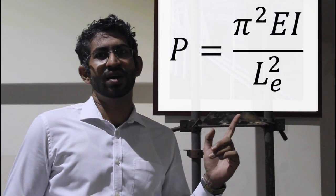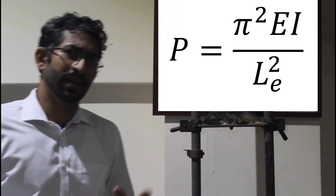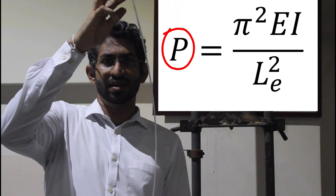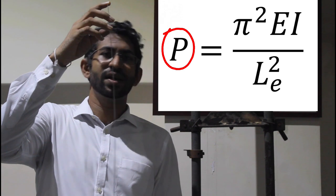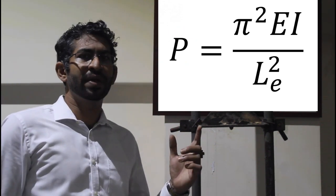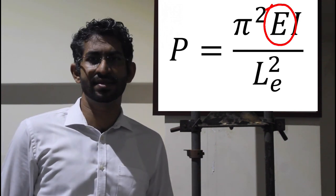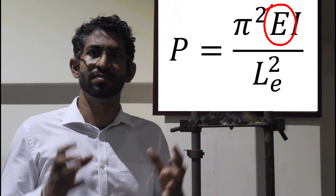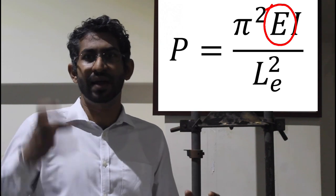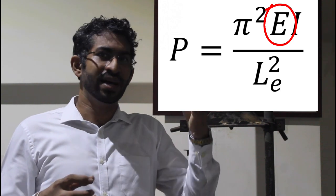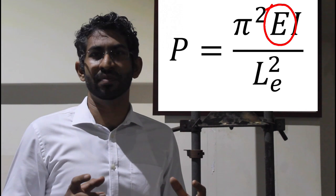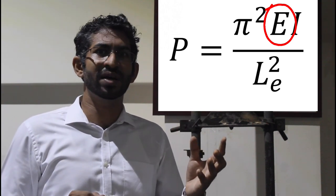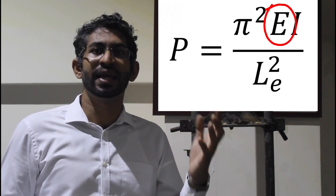This is the Euler formula which is used for calculating the theoretical buckling load. In that, P is the buckling load — the force at which the member buckles. The next parameter is E. E is called the Young's modulus or modulus of elasticity; it is a property depending on the material. If we take two columns with the same properties but different Young's modulus — for example a plastic column and a steel column — the steel column is very hard to buckle because it has a higher Young's modulus and therefore a higher buckling load. The plastic column has a lower buckling load because it has a lower Young's modulus.